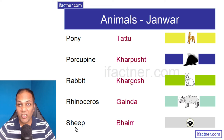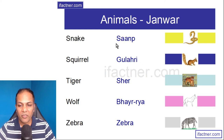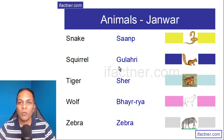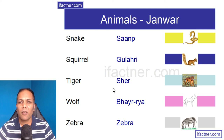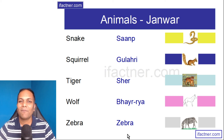Sheep is Bhaer. Snake is Saamp. Squirrel is Gulaheri. Tiger is Sheer. Wolf is Bhaeria. Zebra is Zebra.